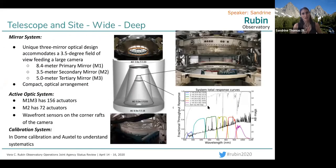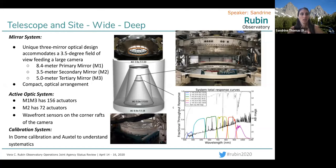I wanted to focus on the core of what Telescope and Site does and the imaging system. It has three mirrors with diameters of 3.4, 3.5, and 5 meters. It was designed to accommodate a 3.5-degree field of view, which is really large. This particular design allows us to get good image quality over that big field of view. All of the mirrors have actuators to further increase the image quality — this is called the Active Optics System.